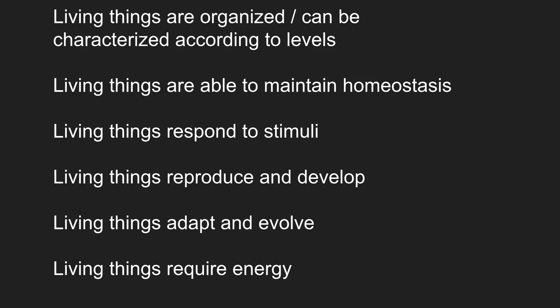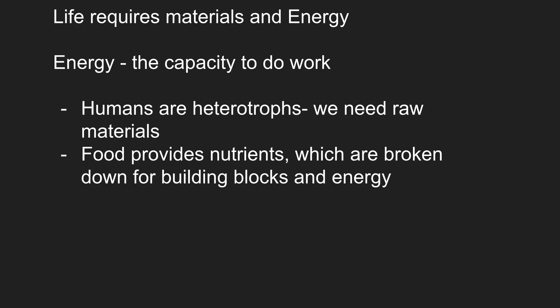Starting with living things require energy. Life requires materials and energy to be input into it. Energy is the capacity to do work. Humans are heterotrophs, which means we need to consume other organisms in order to sustain ourselves. We need energy from the outside and raw material input. This input comes in the form of nutrients, which are broken down to provide building blocks and give us energy in the form of ATP.